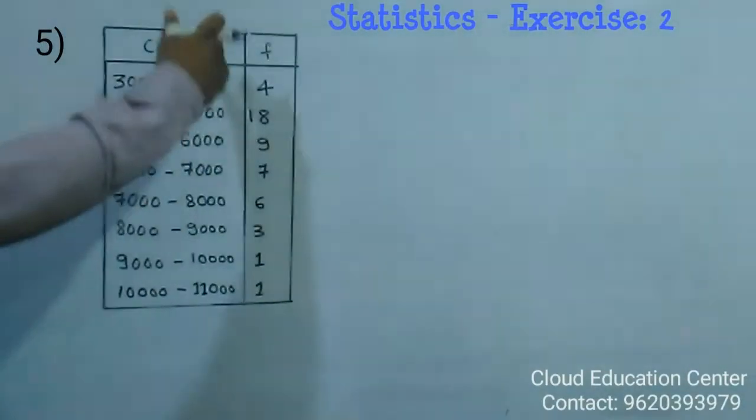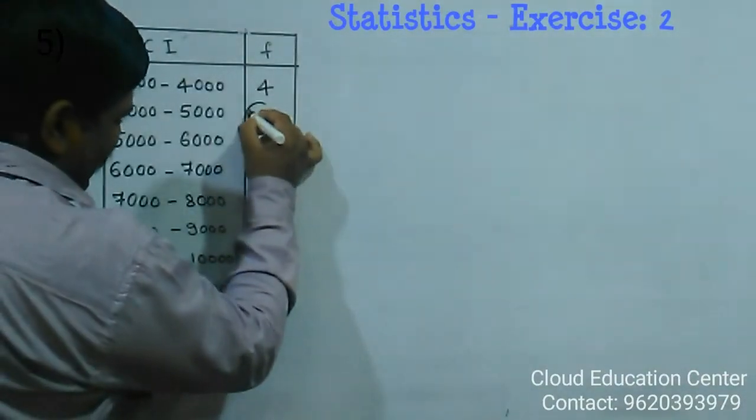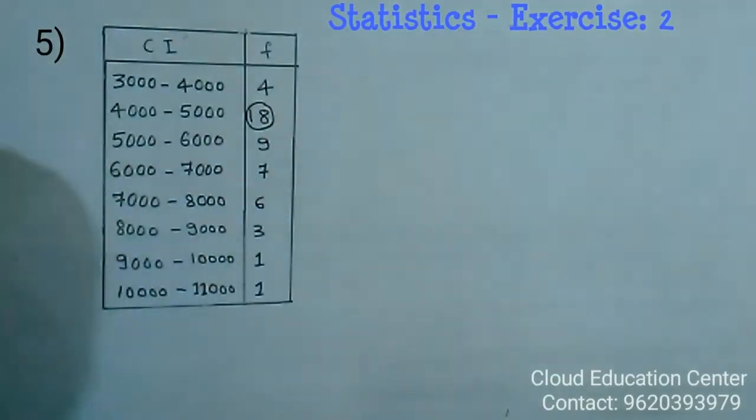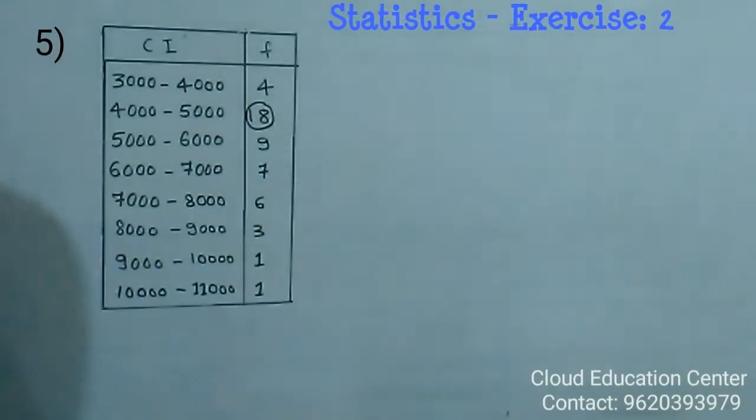In frequency, you observe the greater value. Here, 18 is the greater value. So this is called a modal class.